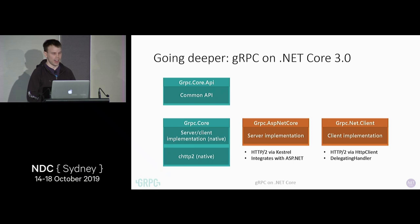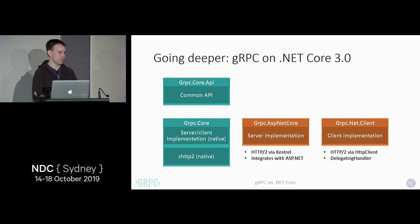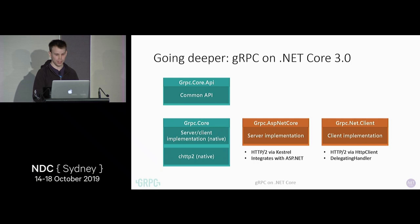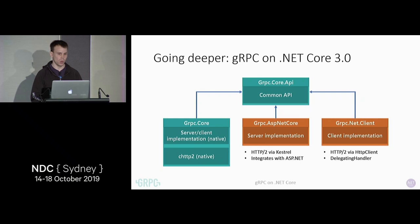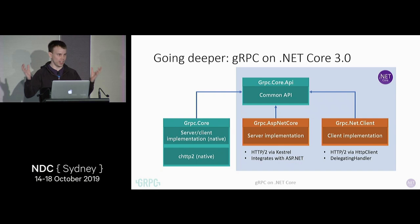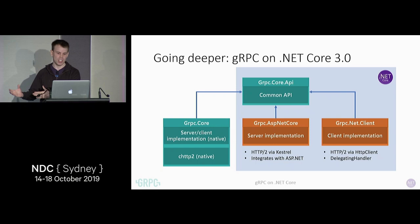Our client is gRPC.NET.Client — it's also a fully .NET implementation and it uses HTTP/2 via HttpClient. Because it uses HttpClient, you can use existing HttpClient technologies like delegating handlers to act almost as outgoing middleware for your gRPC calls. We've taken the common API of gRPC Core and split it off into its own package. Things like the ServerCallContext, the base type for the channel, the base type for the client, some metadata APIs and authorization APIs. One of our goals is to be compatible with gRPC Core — if you're using gRPC Core today and want to move to these new implementations, they're very compatible.